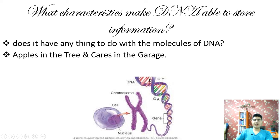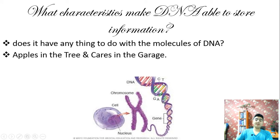Each chain is made up of four kinds of molecular building blocks called nucleotides. All of these colored parts are called nucleotides, and we have four kinds of them that are named T for thymine, C for cytosine, G for guanine, and A for adenine.